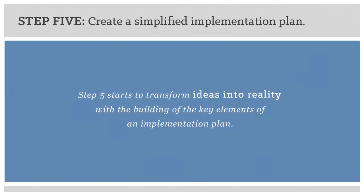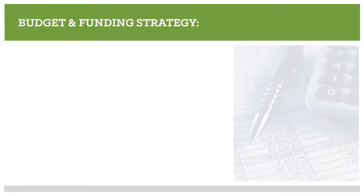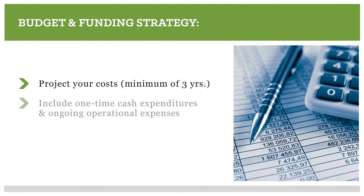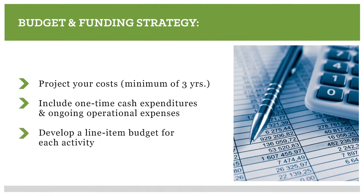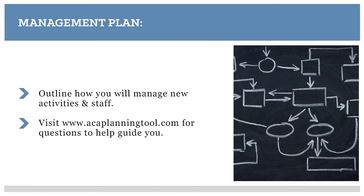Step five starts to transform ideas into reality with the building of the key elements of an implementation plan. This step will help you think about a concrete way to move forward related to staffing, budgeting and funding, and developing a management plan in the context of how you choose to answer your question. The staff responsible for program implementation and the partners who provide program guidance are key factors in the ultimate success or failure of a new venture. In planning for implementation, it is important to determine the most effective structure for program continuation. Having a clear idea of the cost of sustaining your activities is an essential part of the implementation planning process. You may want to project your costs for a minimum of three years to get a complete picture of the total cost, including one-time cash expenditures and ongoing operational expenses. Developing a line-item budget for each activity is necessary for determining your funding strategy.